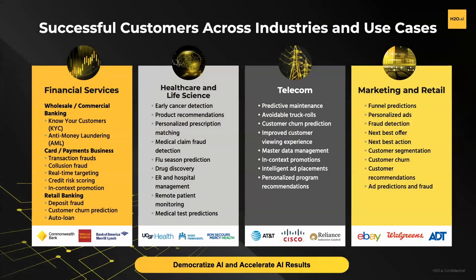We have some of the world's top Kaggle Grandmasters, and we use that expertise within the products we build — the recipes, the applications — things we'll be talking about today that go into having really optimized solutions to accelerate a whole set of use cases. We have use cases across multiple industries: financial services, healthcare and life sciences, telecom, marketing and retail, with customers like AT&T, CBA, and Wells Fargo. We've done everything from preventative maintenance to fraud to spend optimization and personalization.